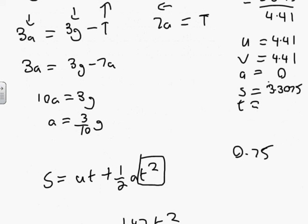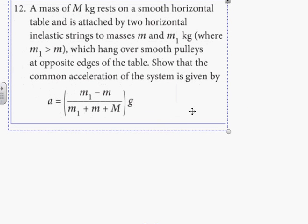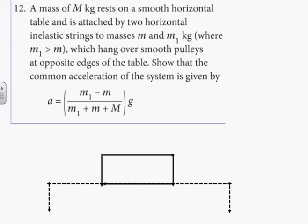Now number 12, el gigante of this section. A mass of m kilograms rests on a smooth horizontal table and is attached by two horizontal inelastic strings, m1 and m2, where m1 is the bigger one. Seen this before. We're going to make our table. So here's our table here.